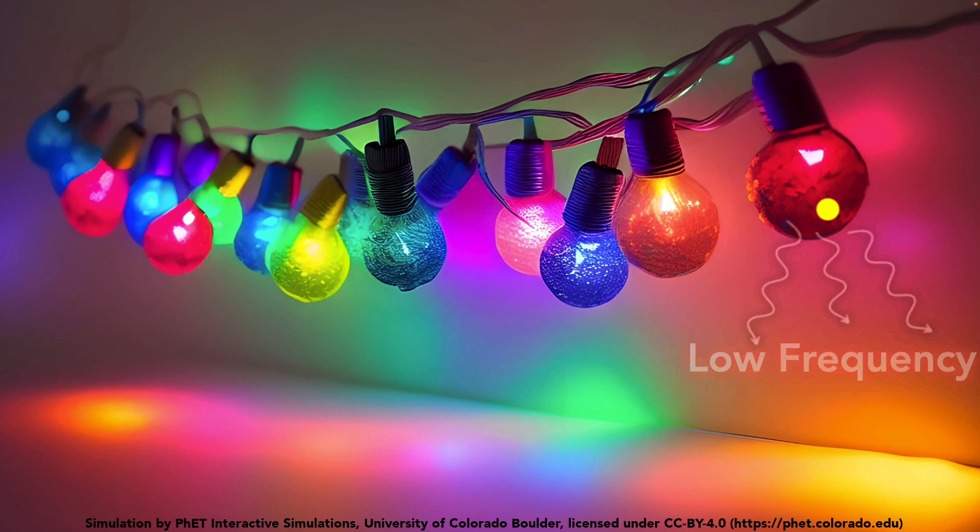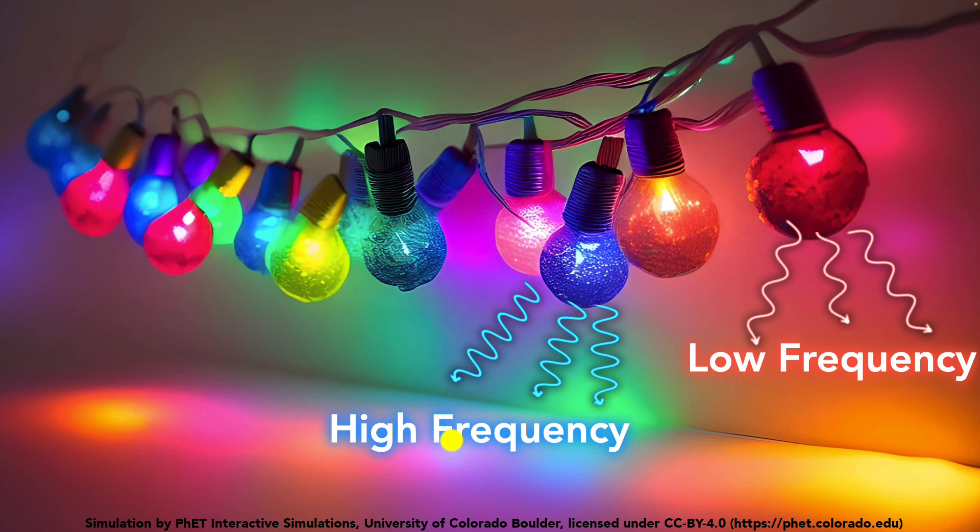So it's the frequency that decides the color of the light. What we register as red color light is basically light of lower frequency. And what we register as bluish color lights are lights of higher frequency. That's what decides the color.